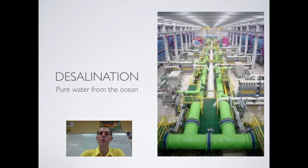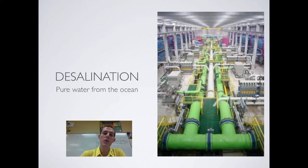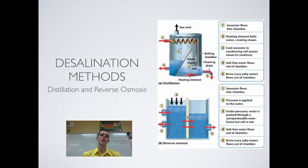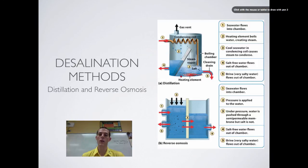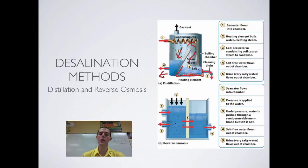We'll finish with desalination, which is simply the process of taking salty water and turning it into fresh water by pulling the salt out. This can be done from ocean water or salty lakes. One key stat: the Middle East produces 50% of the world's desalinated water. There are two types to know: distillation and reverse osmosis. With distillation, you pull in salty water, boil it to produce steam, which rises as pure water leaving the salt behind. That pure water is condensed and captured. Distillation is effective but energy intensive because of the heating element required.